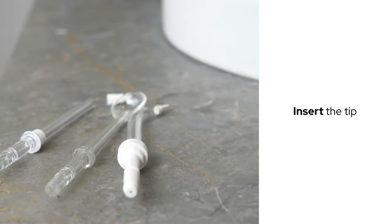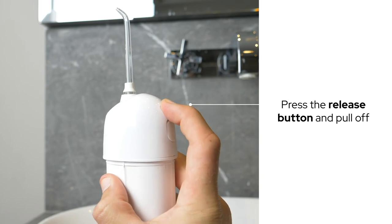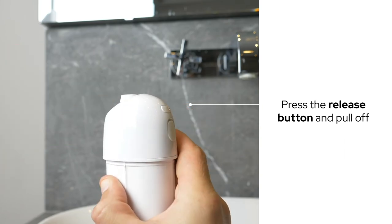Once you've picked your tip, simply insert it into the top of the water flosser. To change tips, press the release button at the back and pull the tip off.